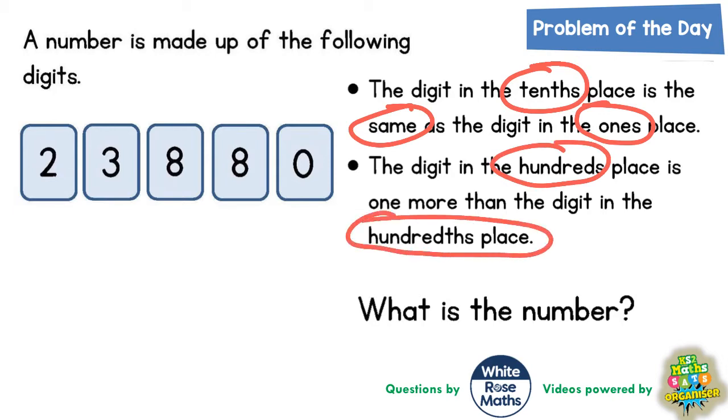Well since we're talking about tenths, hundreds, hundredths and ones we might as well put some column headings in. So let's think about what column headings we'll need. We'll certainly need hundreds so that's H, tens, units, decimal point. Then after the decimal point is tenths and after tenths is hundredths.